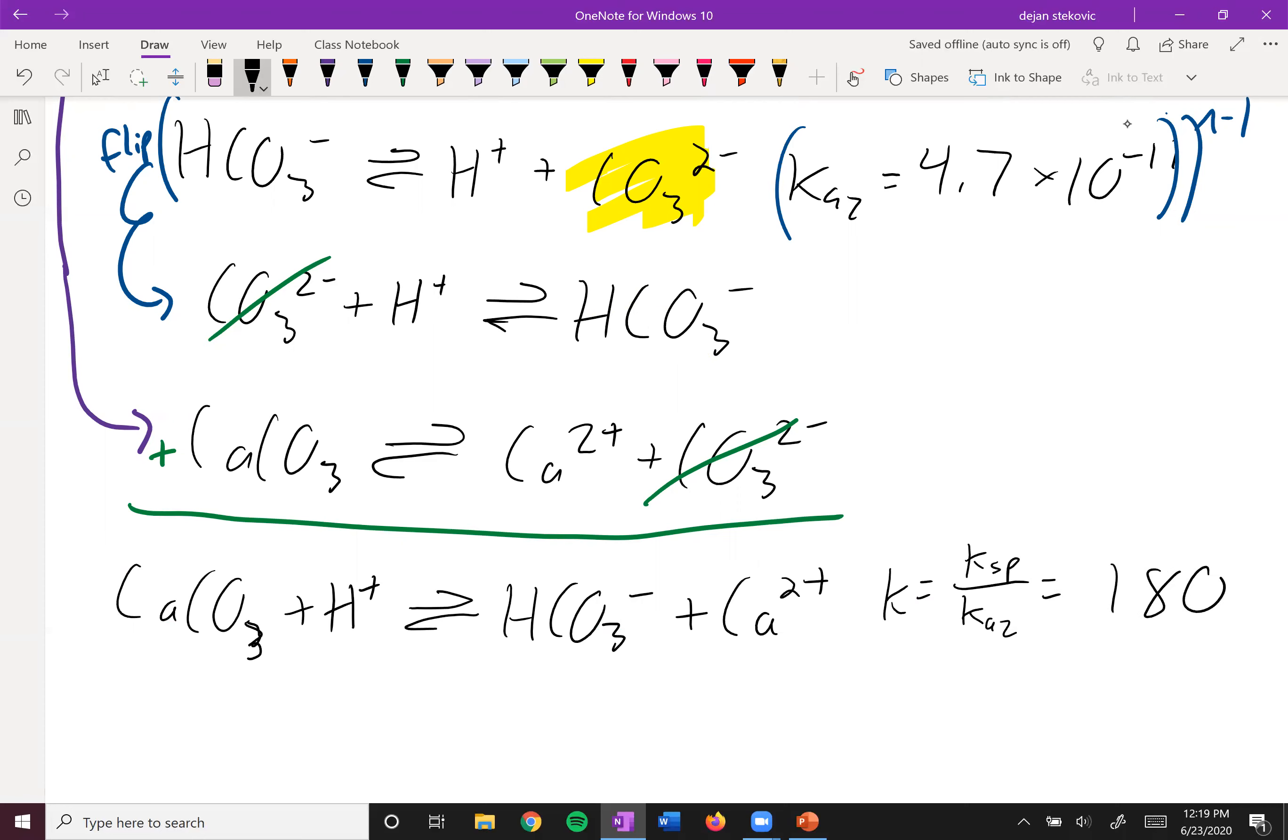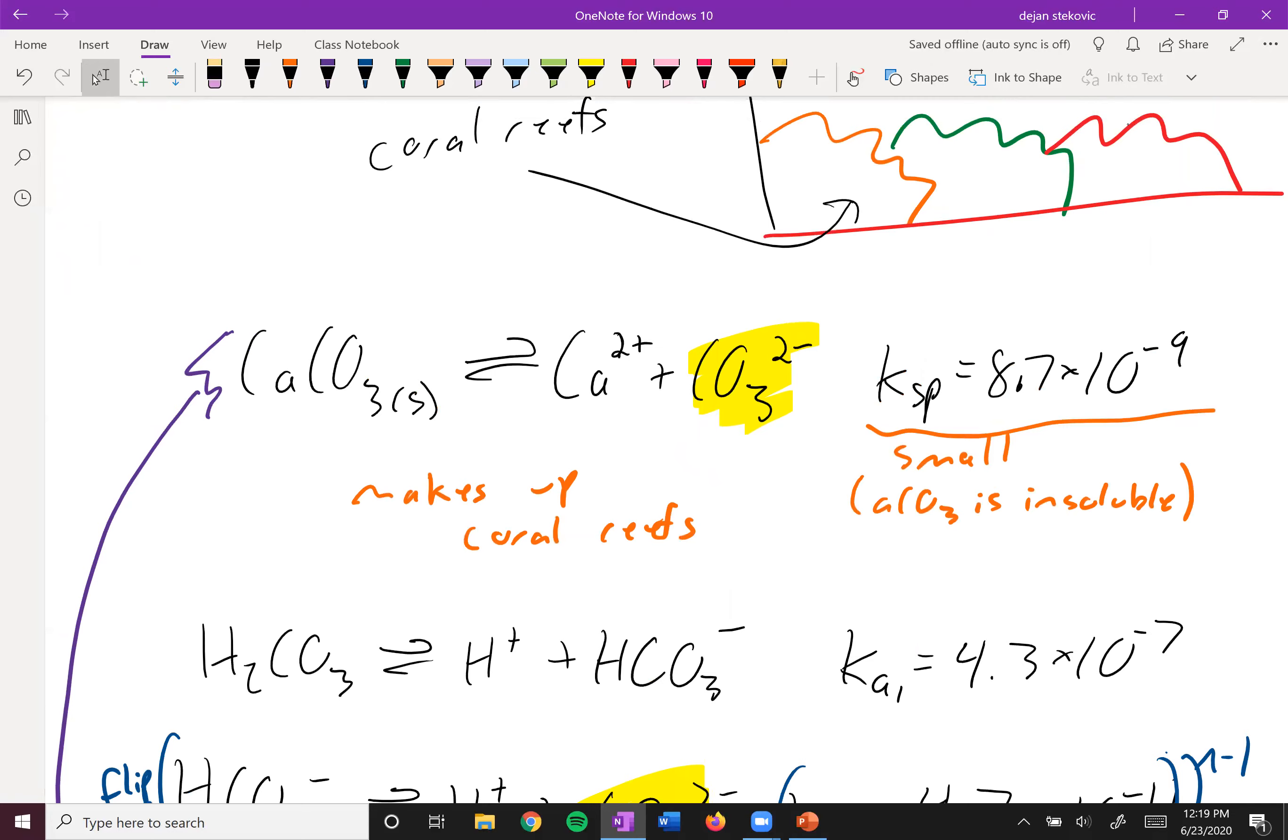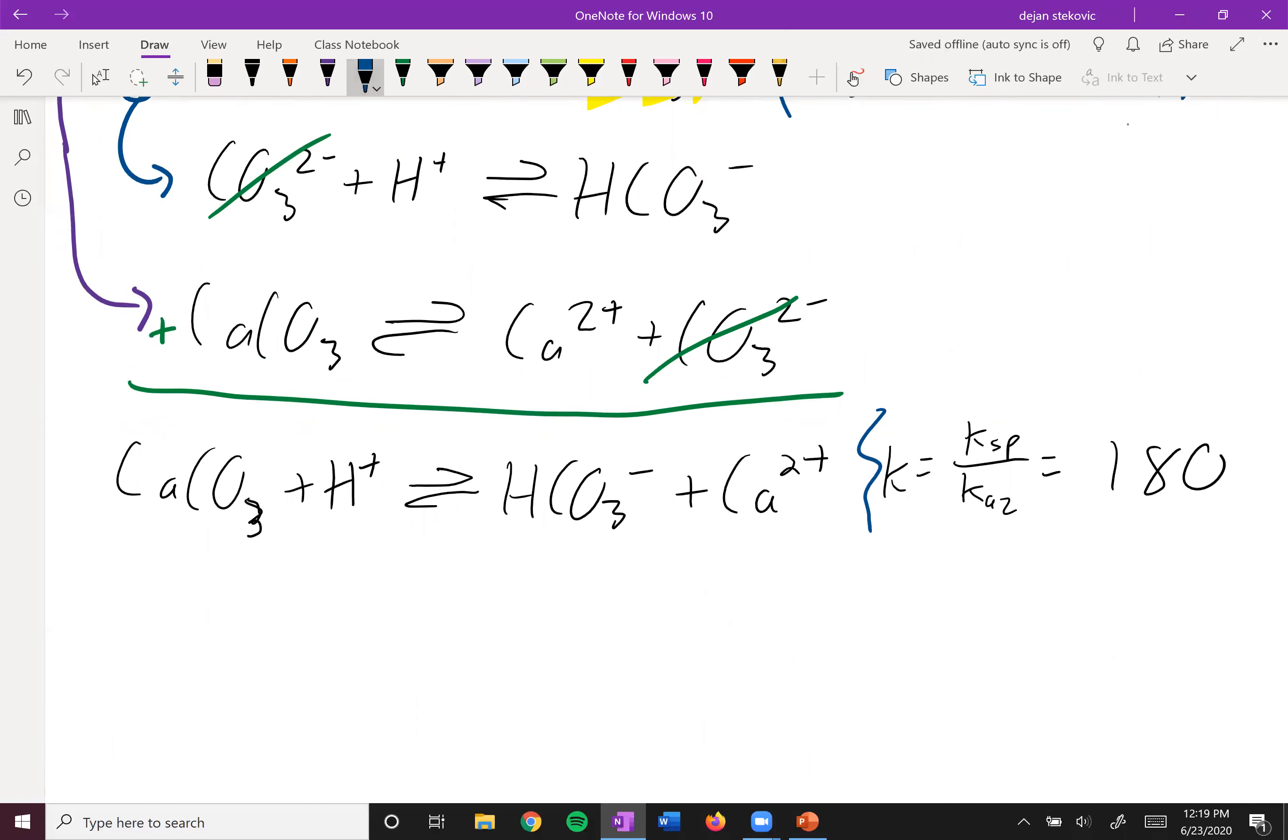And so that's a much, much bigger value of k than 8.7 times 10 to the negative 9. What we can say here is that products are generally favored. If we think about what our products and reactants are, over here on the left we have solid calcium carbonate, which is in this case our coral reef, and then on the right side we have bicarbonate and calcium, and so they're both aqueous solutions. This side is no coral reef because the coral reef will literally dissolve away.